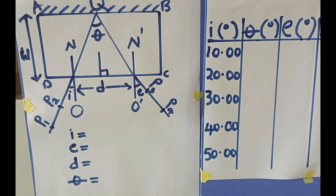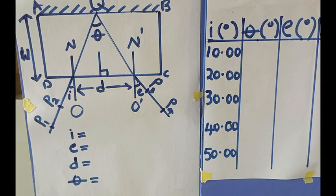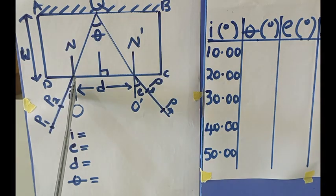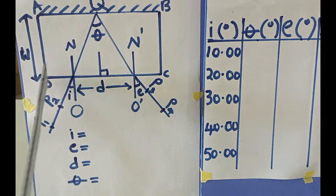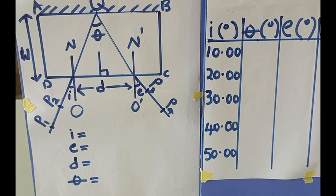You are provided with a glass block, plane mirror, and optical pins. Place the glass block on a drawing sheet and trace its outline ABCD as shown in the diagram. Remove the block, measure and record the width W of the block. Draw a normal ON to DC at a point about one quarter the length of DC, then draw a line making an angle i of 10 degrees.